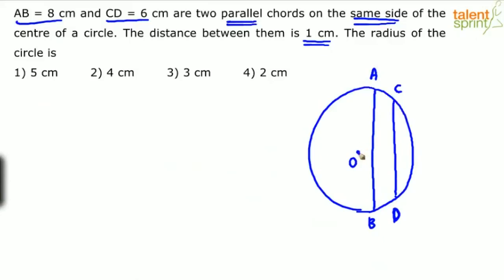Now, like we have discussed earlier, from the center when we drop a perpendicular on AB, the total length of AB is 8. AB equals 8 implies, let's say this point is E. So AE will be 4 and EB will be 4.